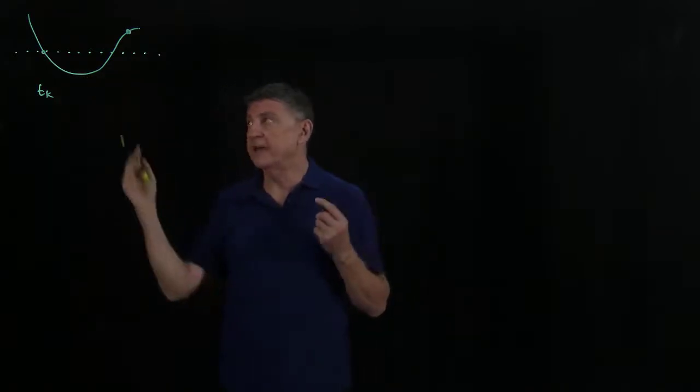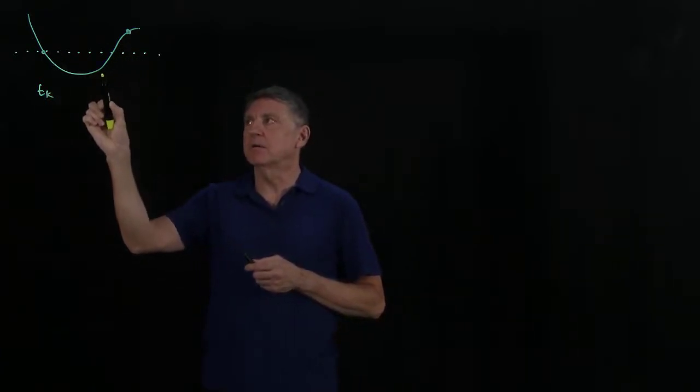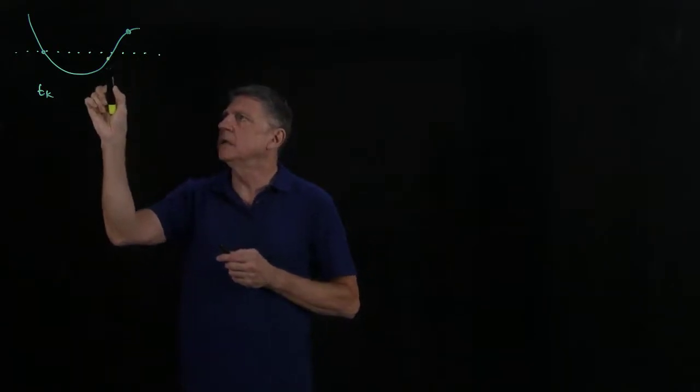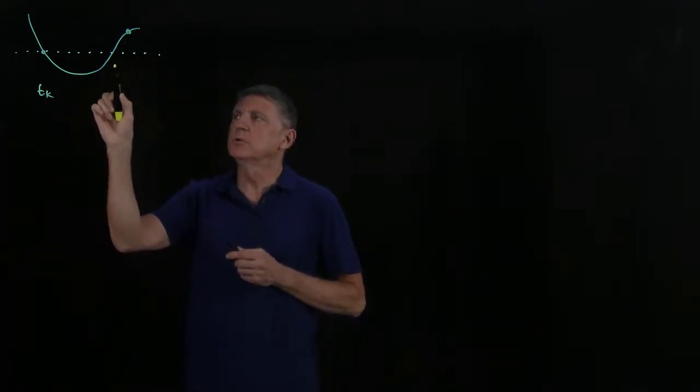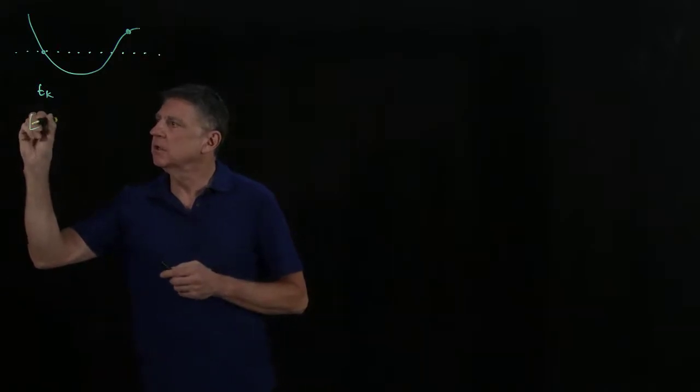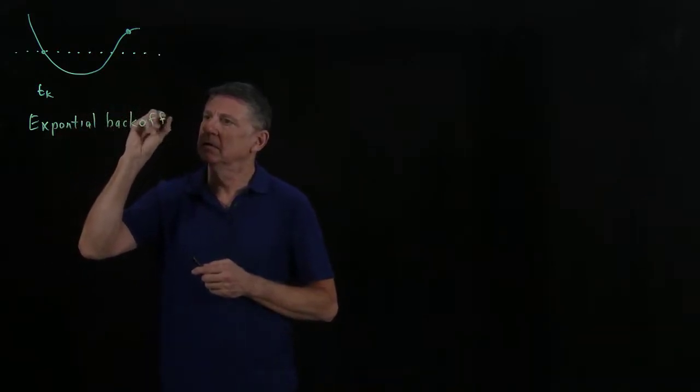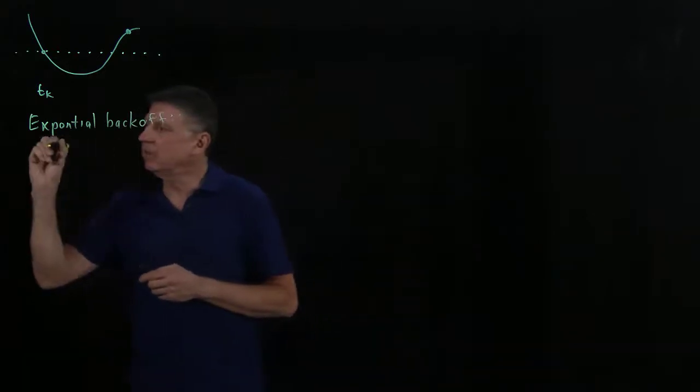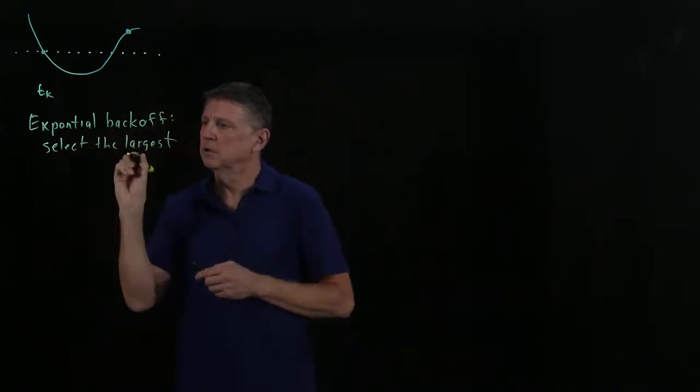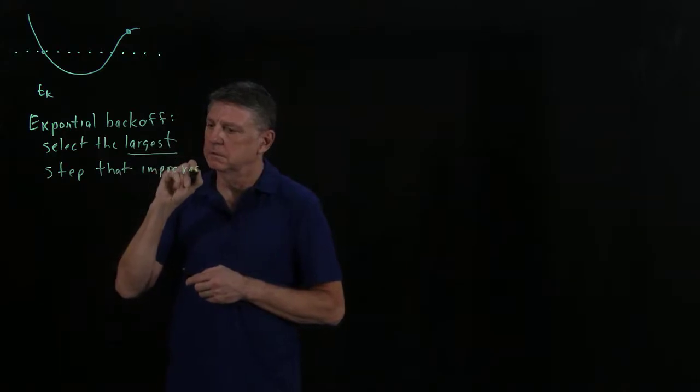We can't just sit there, we have to do something. So what we did was we said, let's exponentially back off. And we picked a back-off parameter beta that we set to one-half. That's a very common setting. And what that will do is that will reduce the step size. What that will do is that exponential back-off will select the largest step that improves the estimate.